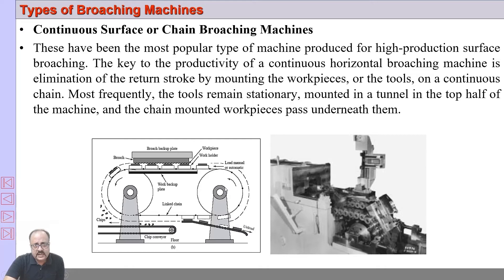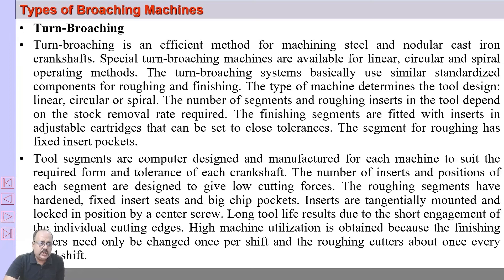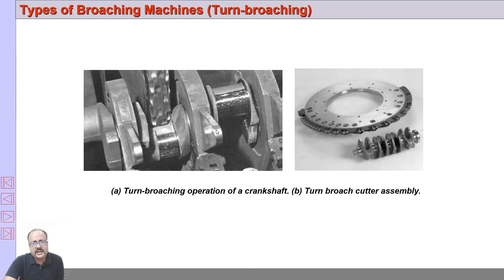Another type is turn broaching. In turn broaching, the broaching tool rotates about the workpiece. For example, with a crankshaft as the workpiece, the huge broach tool rotates around it — you can see the roughing teeth and finishing teeth on the tool. In one complete turn, the entire workpiece is finished.